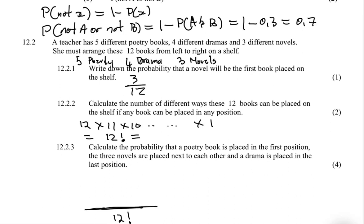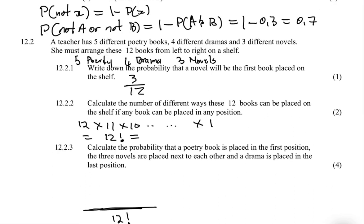On the numerator we count the favorable outcomes. First, a poetry book in position one — we have five poetry books, so that contributes a factor of 5. Next, three novels placed next to each other — they can be arranged in 3 factorial ways, so we multiply by 3 factorial.